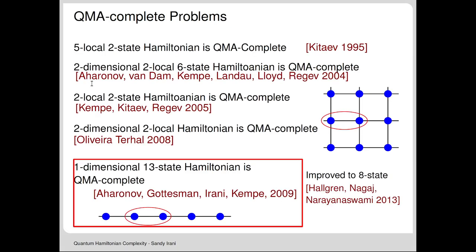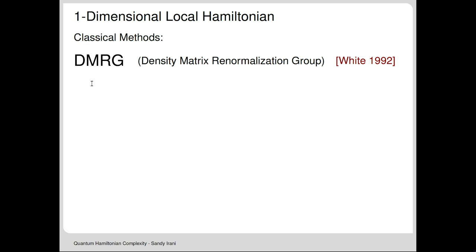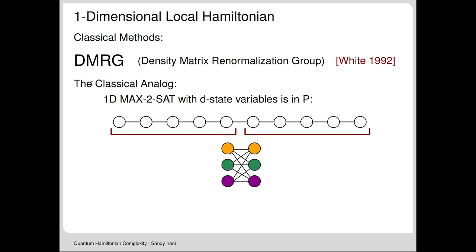Now the 1D case. Very similar ideas, but with a couple of technical challenges to mention. This result was more surprising for two reasons: the classical counterpart is easy (solvable in polynomial time via dynamic programming), and numerically, 1D was considered tractable—Steve White's density matrix renormalization group (DMRG) technique at UCI has been enormously successful at finding ground states of 1D systems. So there's a big difference now between classical and quantum in 1D.